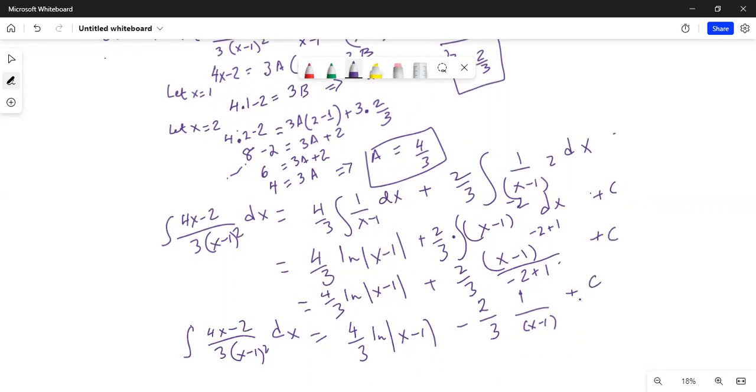If you want to further simplify this, you can take 2/3 out as a common factor outside the parenthesis. Then you will be left with 2 ln|x minus 1| minus 1 over (x minus 1) in the denominator, and then the integration constant C.